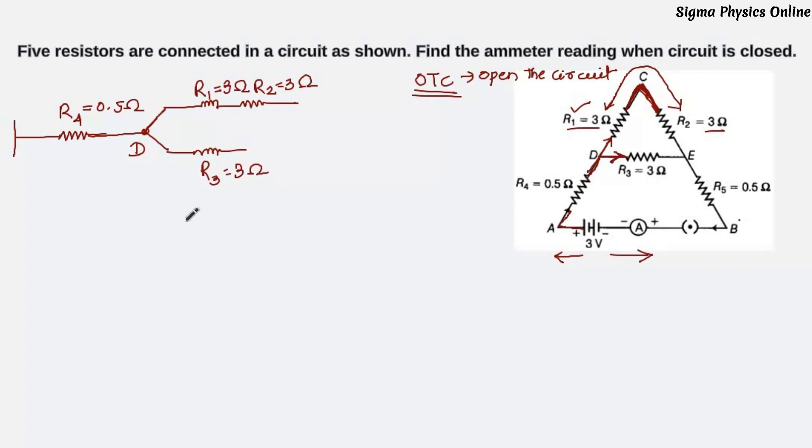One end of R3 is connected to the point D. The other end of R3 is at the point E. This is my point E. Now, to the point E the other end of R2 is coming and attaching. This point E is the point where the two branches meet.